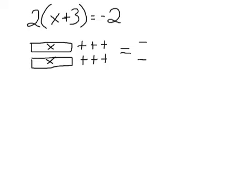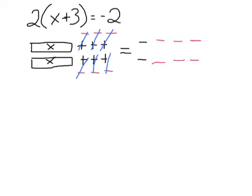Now we want to get the X values by themselves — we need to get rid of these plus signs. To get rid of plus signs, we do the opposite of what we're already doing. So I'm going to draw in 6 negatives and pair them up with those plus signs, then cross out all those zero pairs. Now I have the Xs by themselves. Whatever I do to the left side of the equation, I also have to do to the right side, so I also need to add 6 negatives to this side. That's step 1 done.